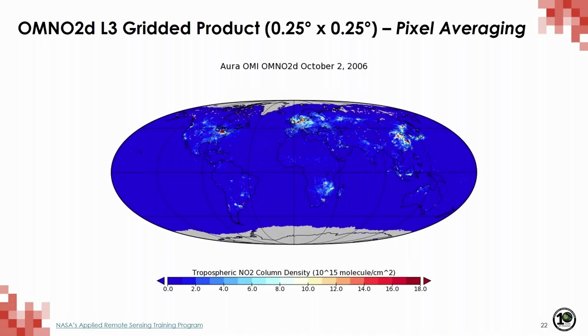OMNO2D is the Level 3 daily global gridded product at quarter-by-quarter degree. This product is gridded where pixel-level data of good quality are binned and averaged into quarter-by-quarter-degree grids. It contains total column NO2 and total tropospheric column NO2 for all atmospheric conditions and for sky conditions where the cloud fraction is less than 30%.